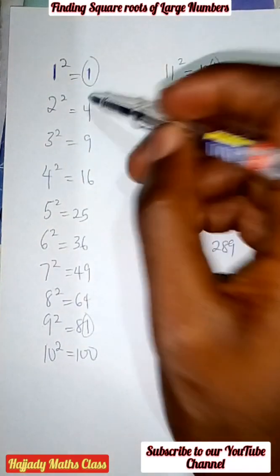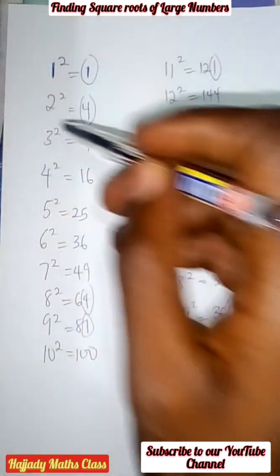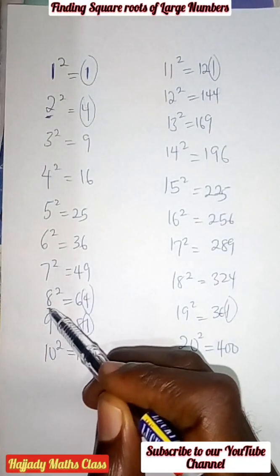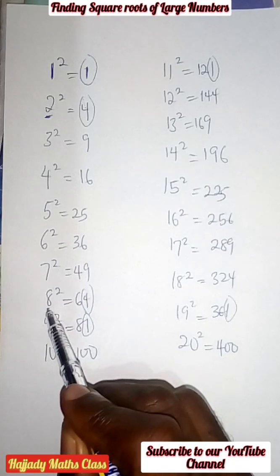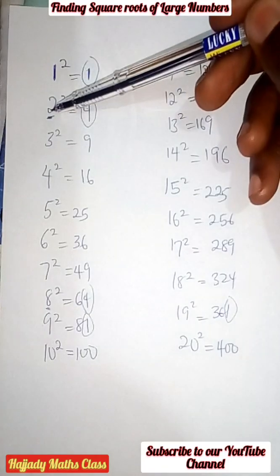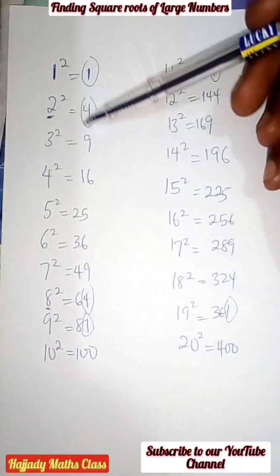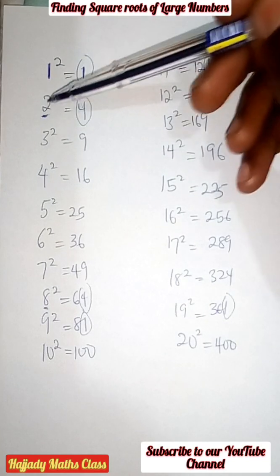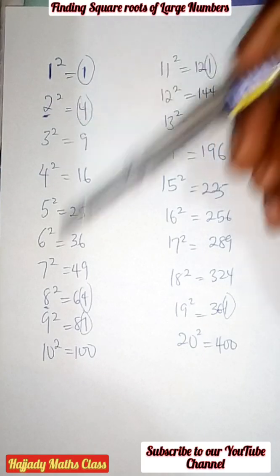The same thing with four. Here we have four and four as the last digit, so that means the perfect squares are two and eight. Anytime you have two or eight as the last digit of the root, you will surely have four as the last digit of the perfect square. Two squared gives us four, and eight squared gives sixty-four.